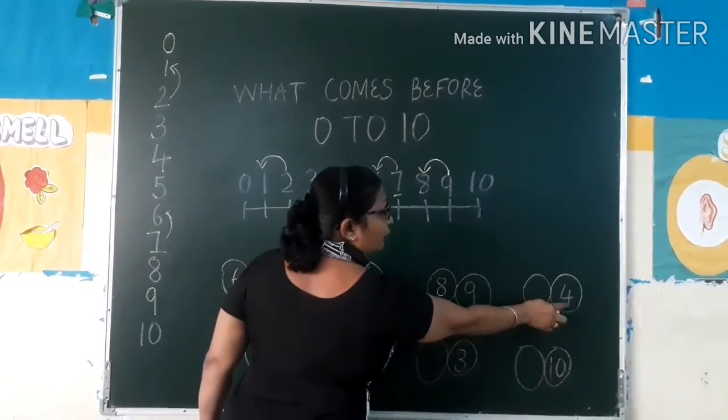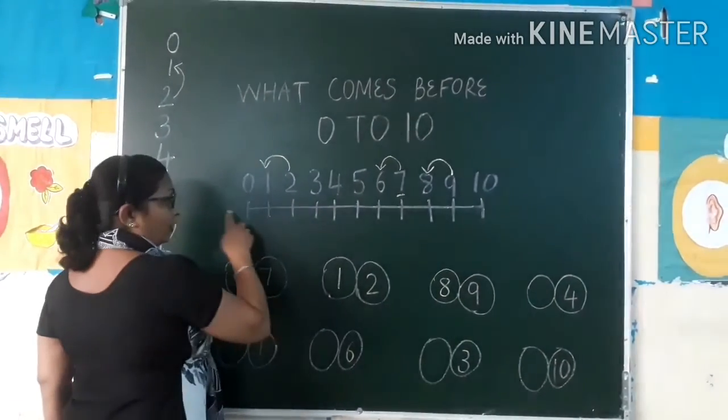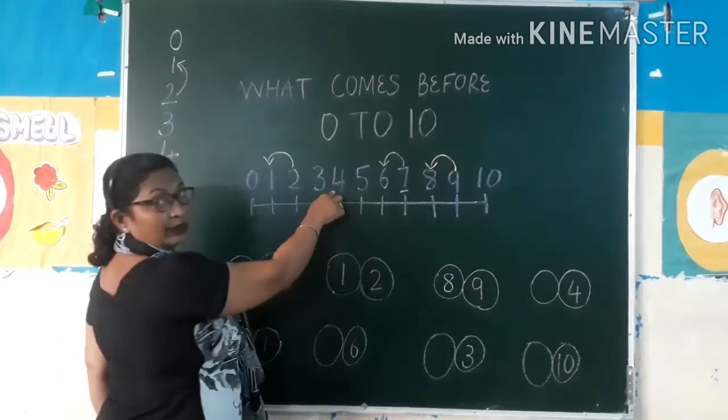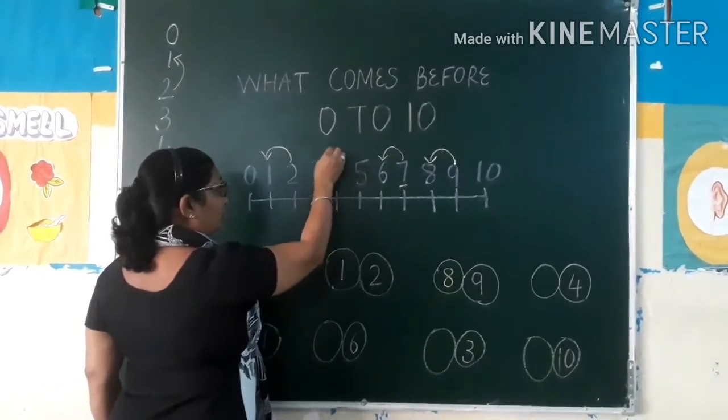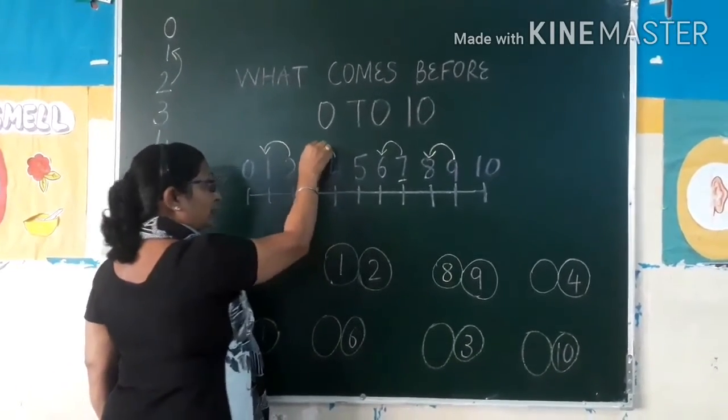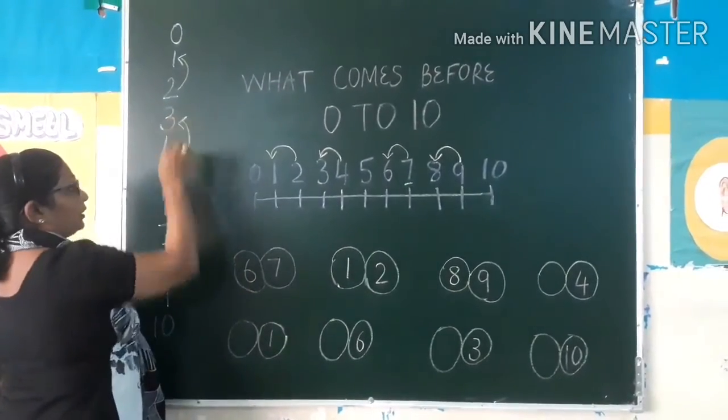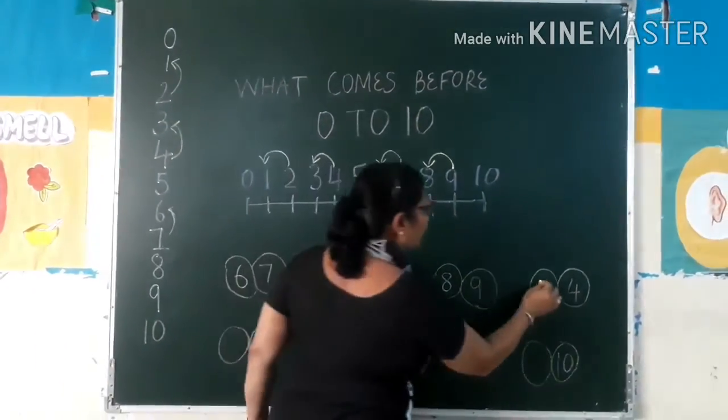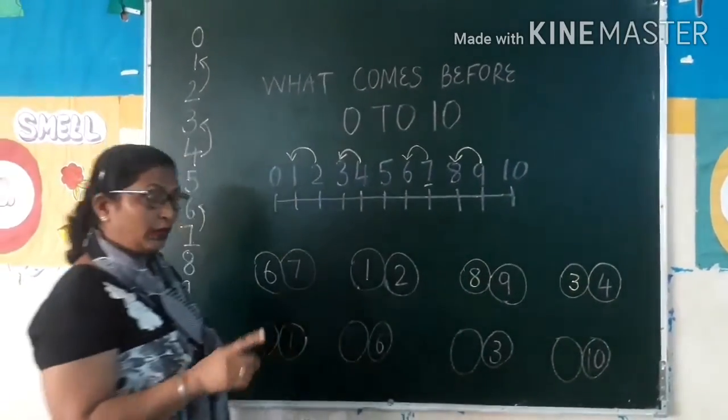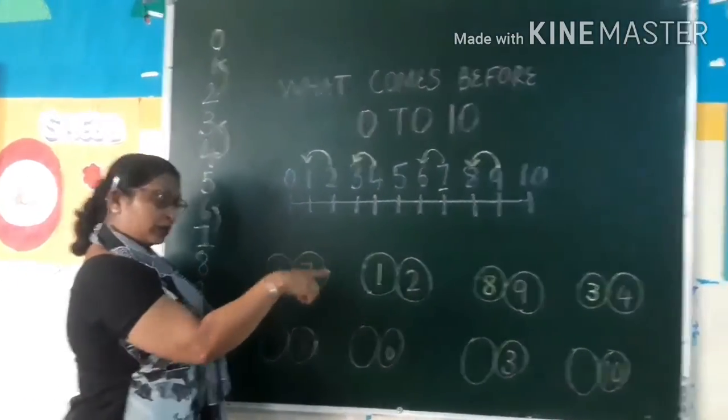Okay? And what is before four? Find out where is four? Here. This is four. And what is before four? Number three. Yahan se bhi number three. Upar ko dekh lena hai. Aage ko dekh lena hai. Number three. Four se pehle kya aayega? Three.